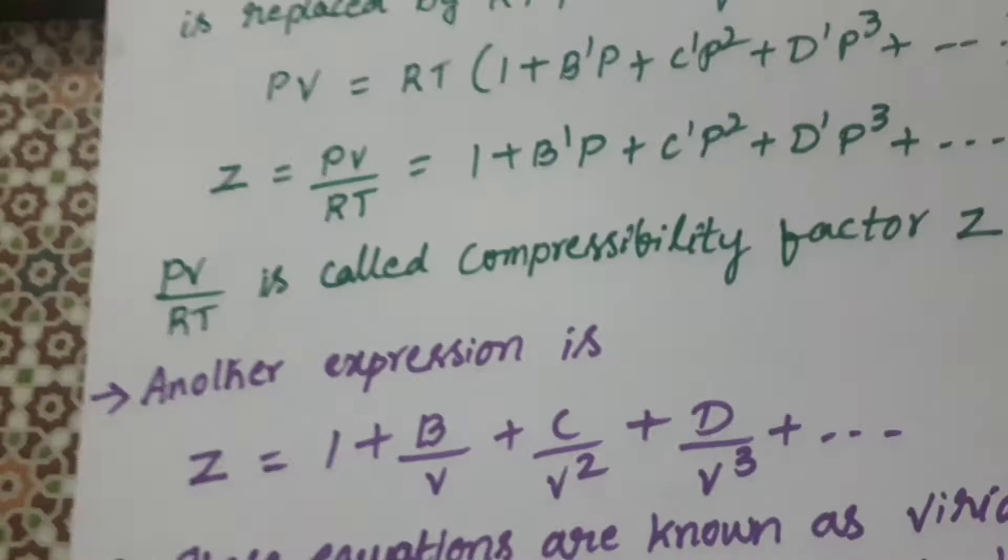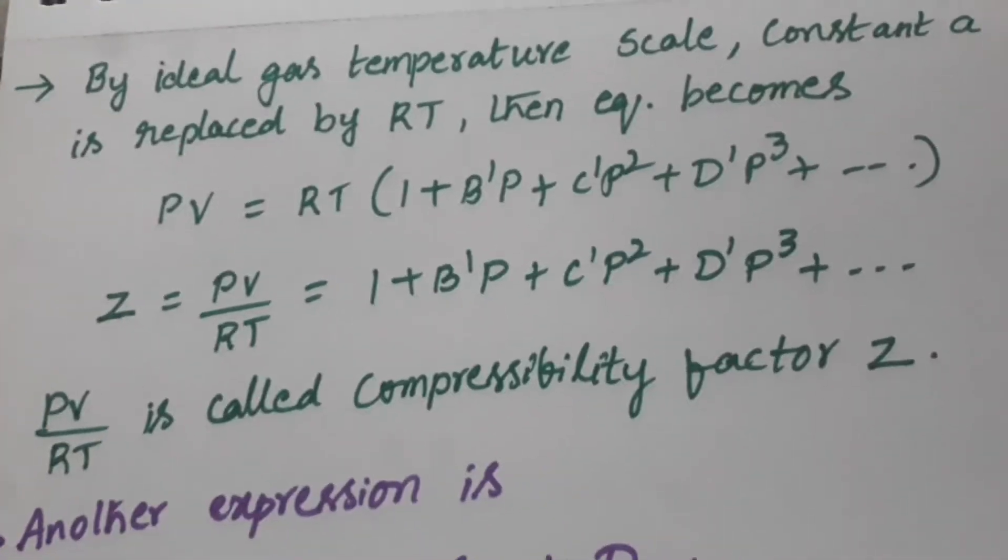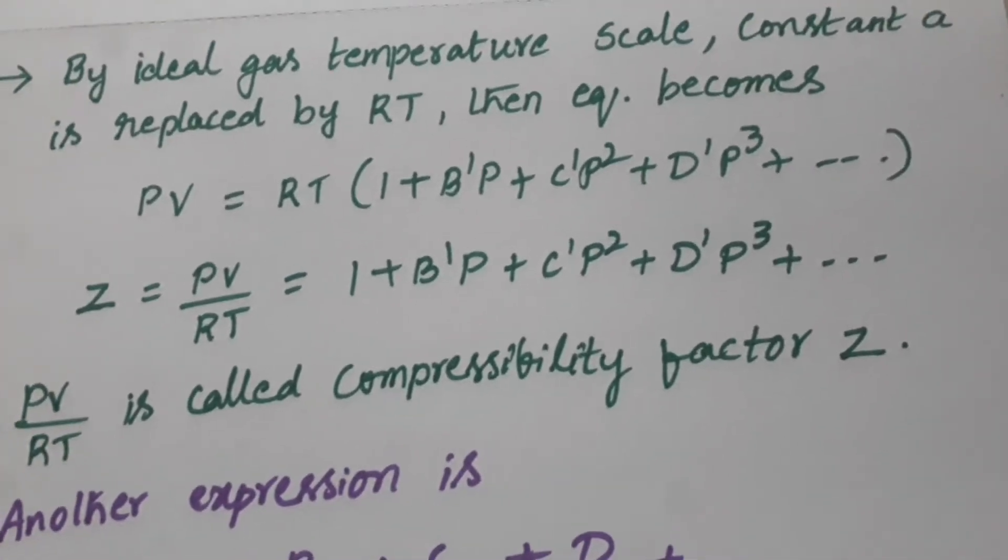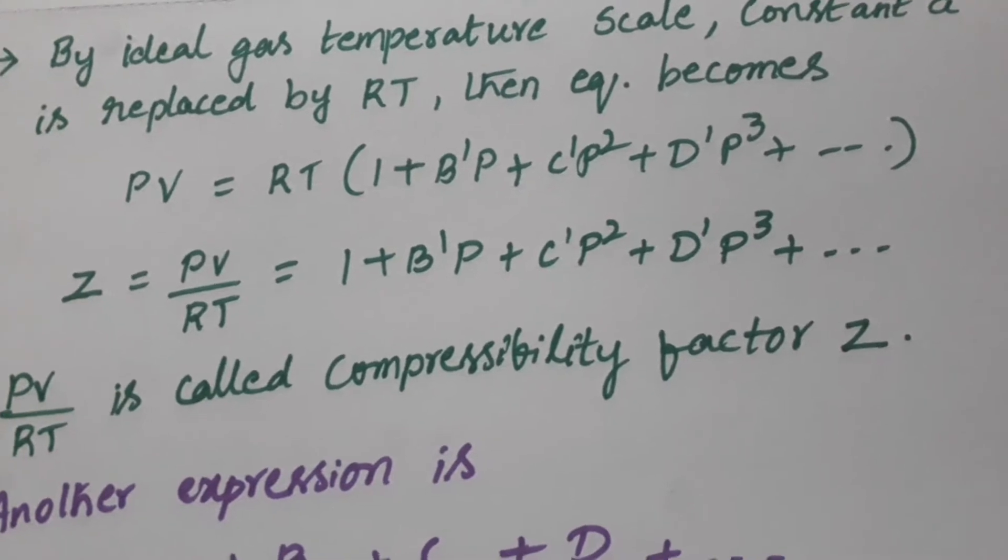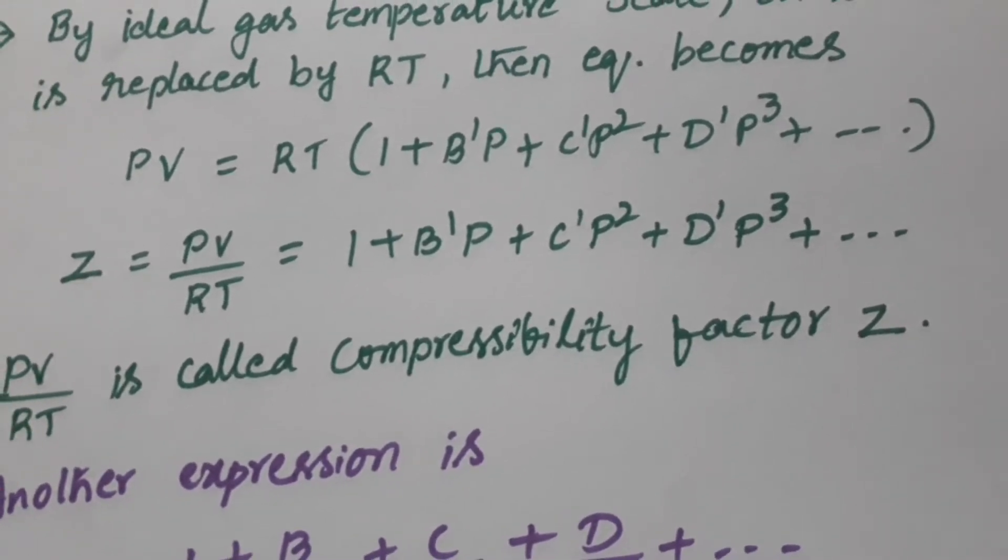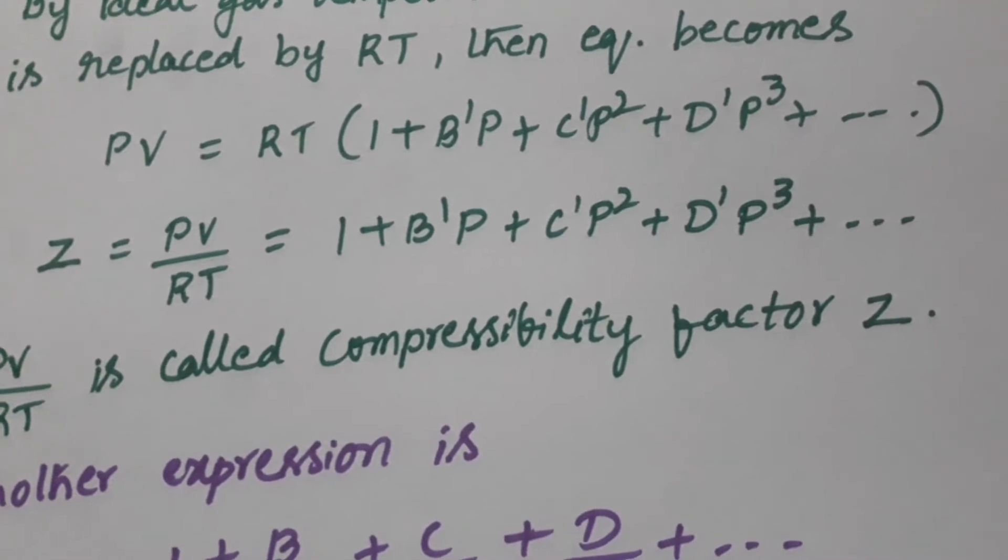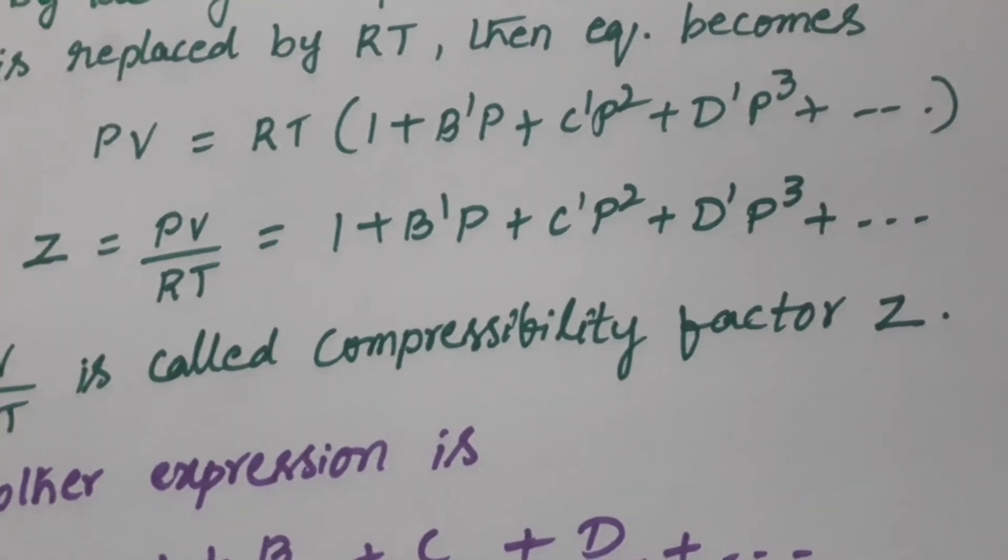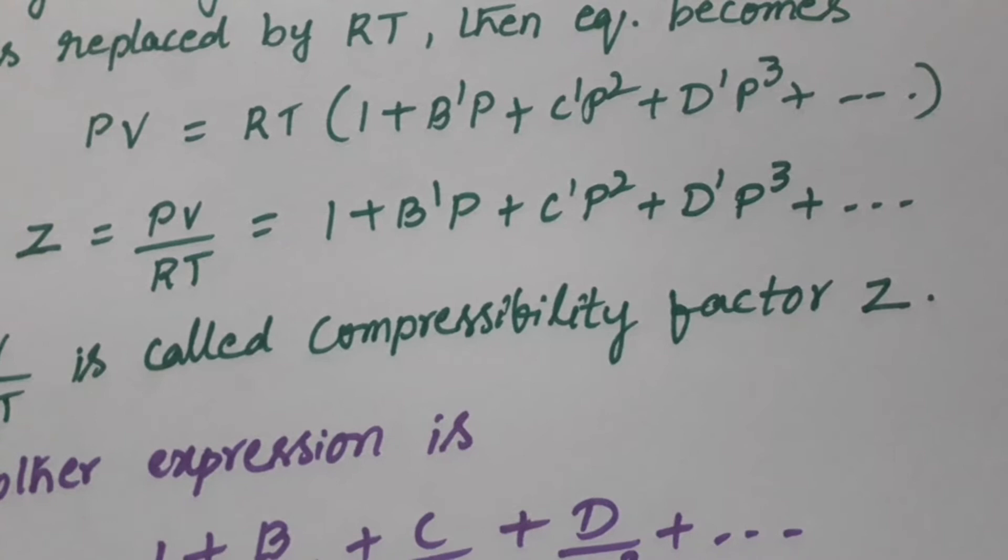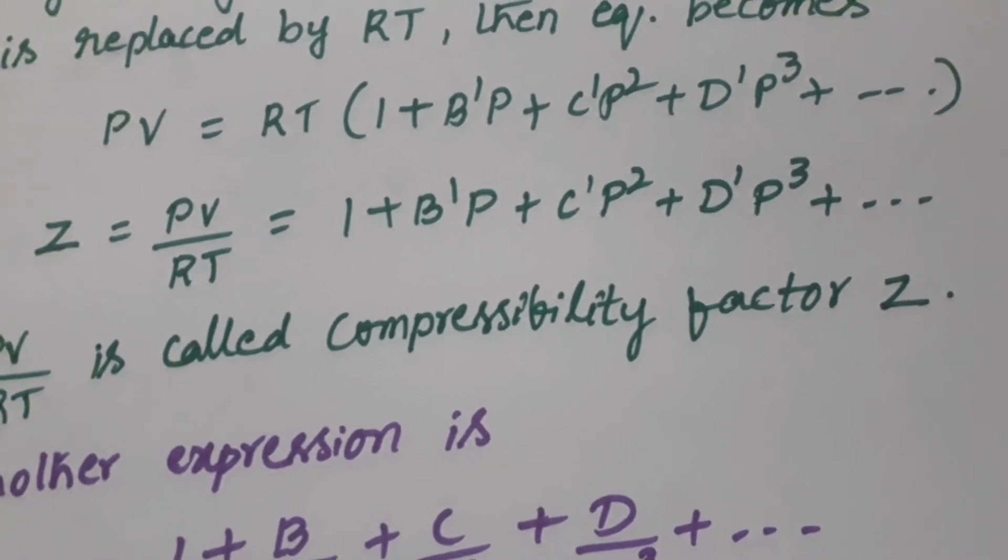So continuing this, we have this ideal gas. By ideal gas temperature scale, if you take this constant a is replaced by RT. Then the equation becomes PV is equal to RT into (1 plus B'P plus C'P² plus D'P³ and so on).